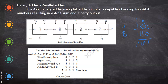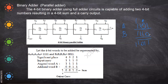Half adder and full adder are not enough for four-bit, eight-bit addition. When a word consists of more than four bits — say A consists of four bits and B consists of four bits, or even eight bits and sixteen bits — how do we add them simultaneously and parallelly? For that we have to use a binary adder, also called a parallel adder.